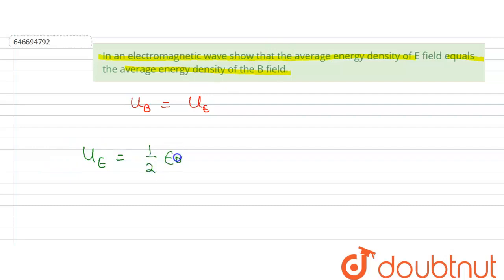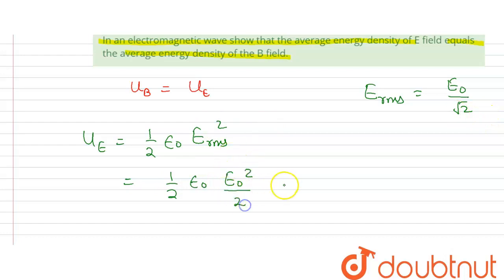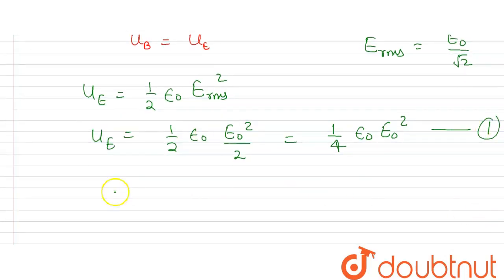We know that the energy density of the electric field, u_e, is equal to half ε₀ E_rms². And E_rms equals E₀ divided by √2. So substituting, we get half ε₀ times E₀²/2, which gives us (1/4) ε₀ E₀². This is equation 1 — the energy density of the electric field.